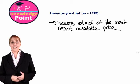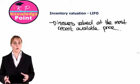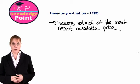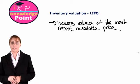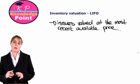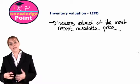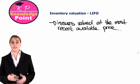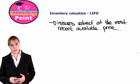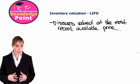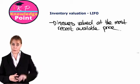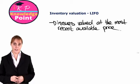Like in the last session, we are going to go through an exercise where we record the receipts and issues for a particular month, this time using the LIFO method. What we are going to discover is that the LIFO method will give us a different valuation on the issues, and a different closing inventory value to the FIFO method we saw in the previous session.